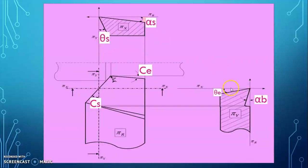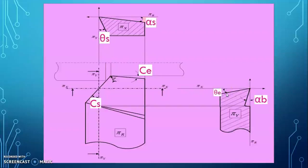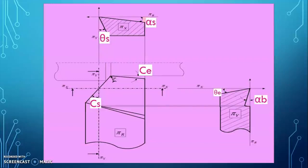The second clearance angle is in the transverse plane. The end flank of the tool is ground to provide relief so that it does not contact the workpiece. This angle is measured in the transverse plane and is called the end relief angle or end clearance angle, denoted as theta-e.